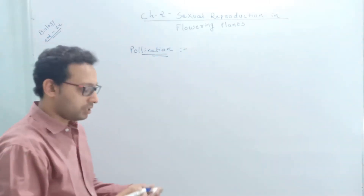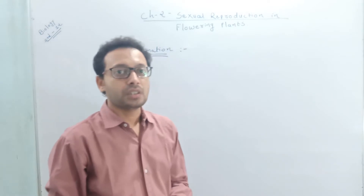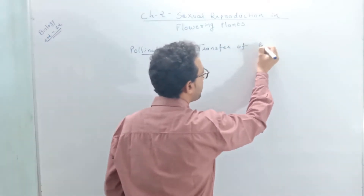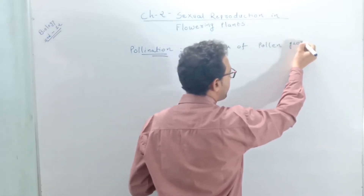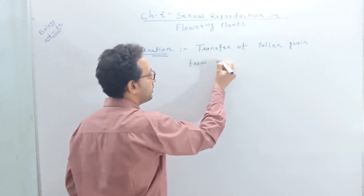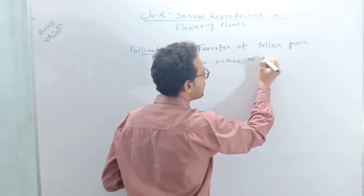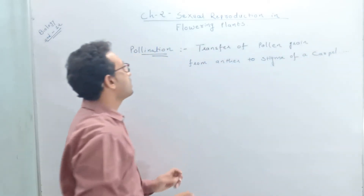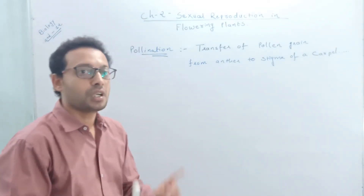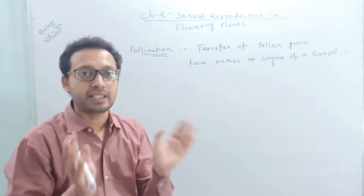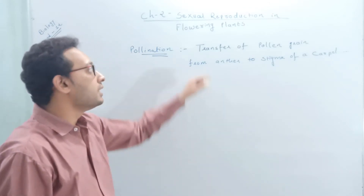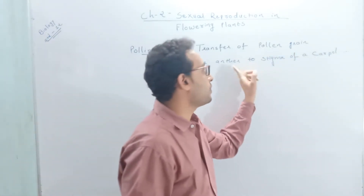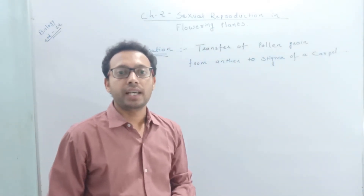Pollination means transfer of pollen grain from the anther to the stigma of a carpel. This process is called the pollination process. It is a gamete transfer process — what is transferred is the pollen grain, from the anther to the stigma of a carpel.